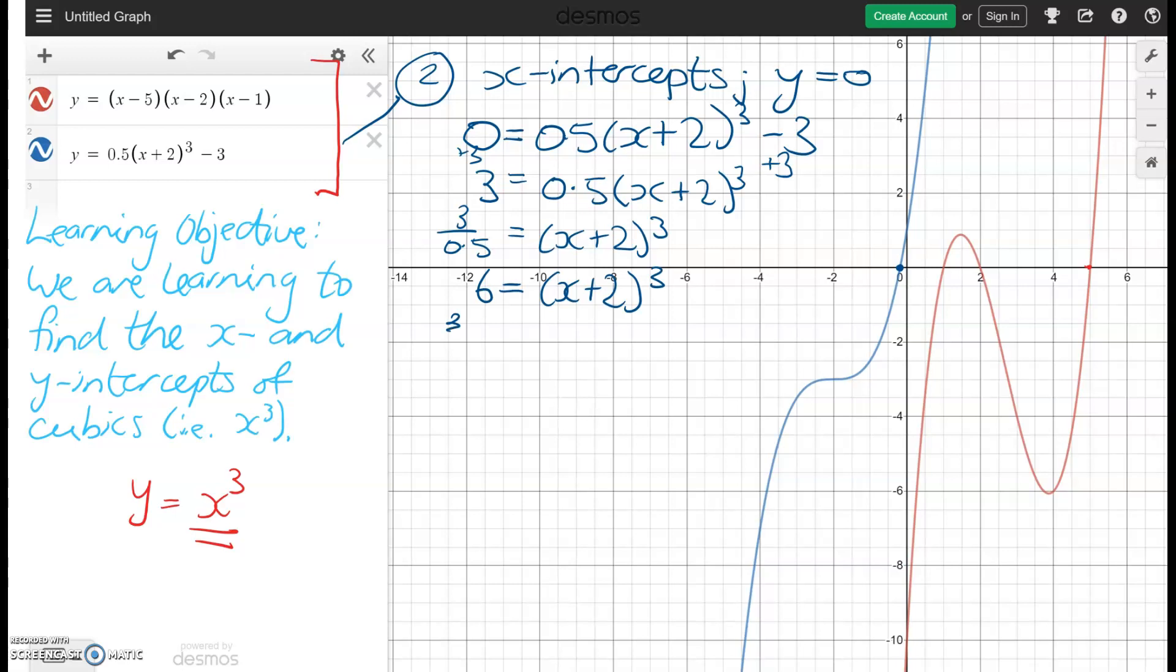We now want to find the cube root of six. That is going to be equal to x plus two. Which means x is going to be equal to negative two plus the cube root of six. So I'll put that in my calculator and negative two plus the cube root of six.